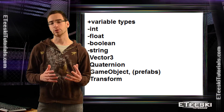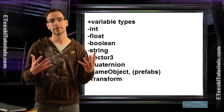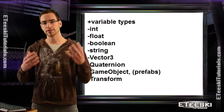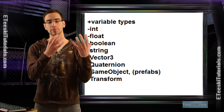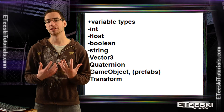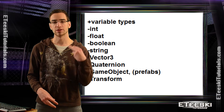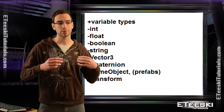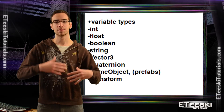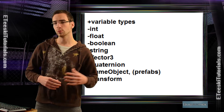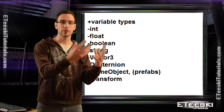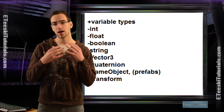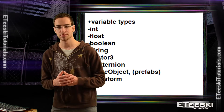First of all, let's define a variable and exactly what a variable is. A variable, in simple definition, is something that remembers a bit of information. I like to think of a variable as a container, and the variable type determines what type of information that particular variable can hold — whether that's a single number, some letters, a whole number, a number with decimal points, a transform, or a game object which can be a prefab that you can copy and paste into your scene.